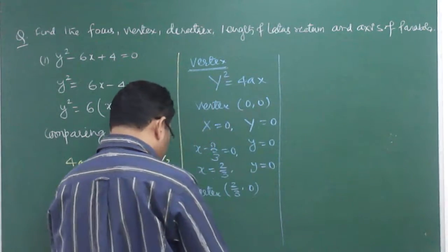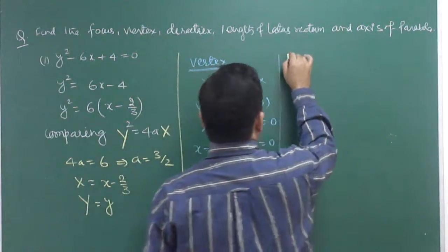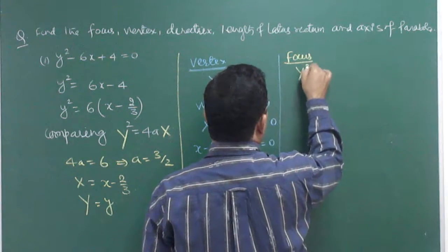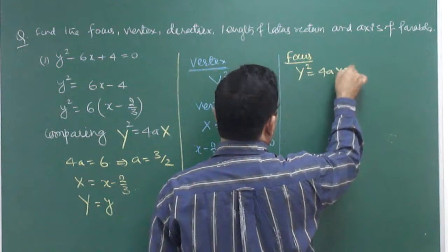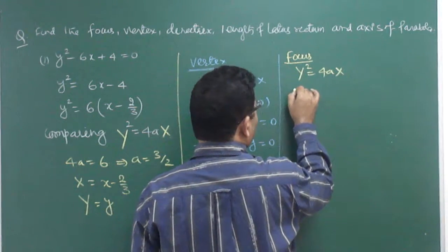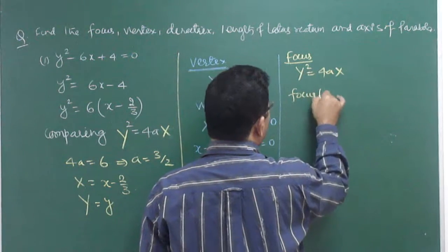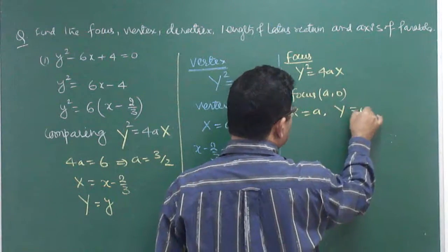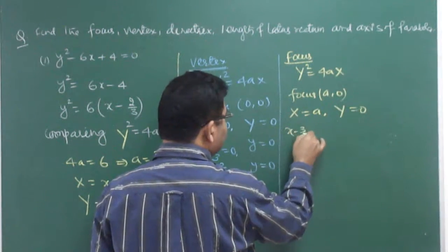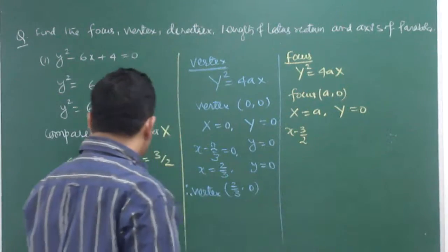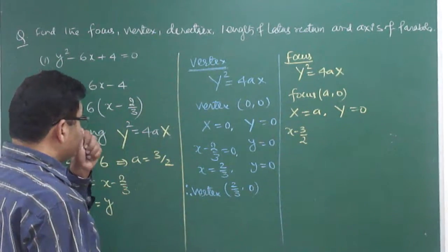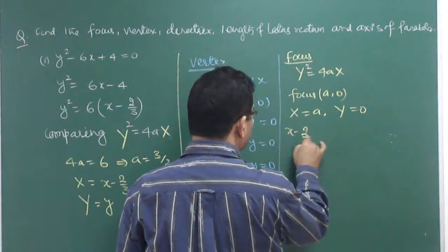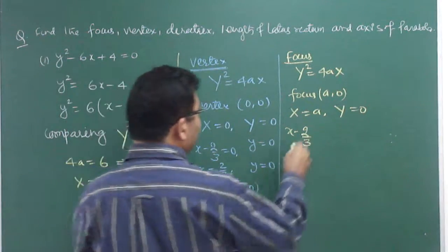Now we find the focus. For the parabola y² = 4ax, focus is at (a, 0). So capital X = a and capital Y = 0. But X is in fact x - 2/3 and a is 3/2. So x - 2/3 = 3/2, and y = 0.